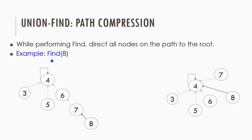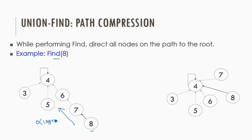We still have an opportunity to improve the approach. Consider the operation find(8). To find the representative of 8, we need to traverse along a path, and for this traversal in the worst case the time complexity is O(log n).